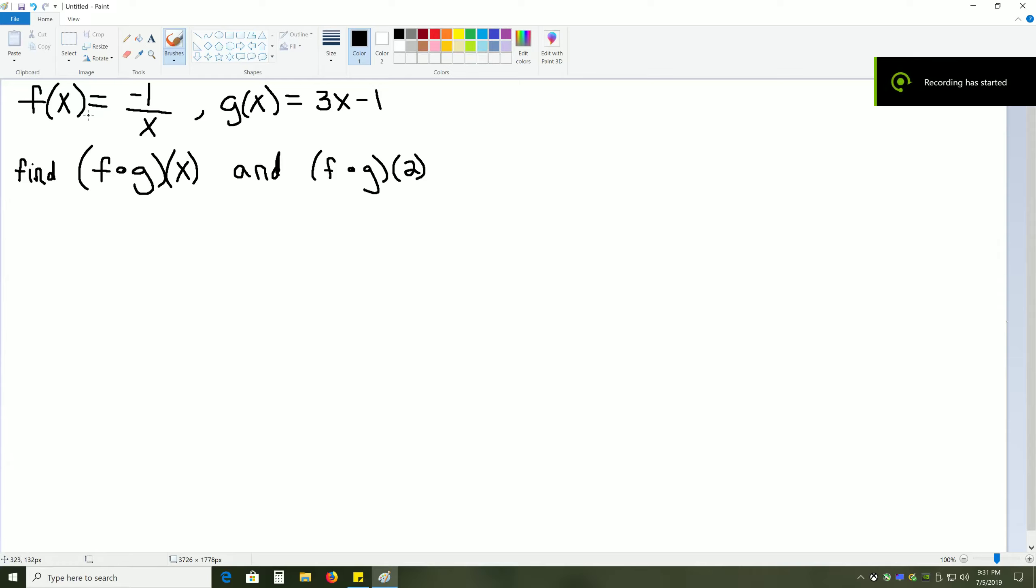For this problem, we're given two functions: f of x equals negative 1 over x, and g of x equals 3x minus 1. We're told to find f of g of x, or FOG, and f of g of 2.